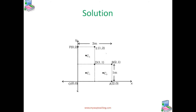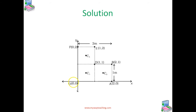Choosing X and Y axes as given in the figure, we have the coordinates of the vertices of the L-shaped lamina as given. The coordinates of vertex A is (2,0), F is (0,2), and O is (0,0). We can think of the L shape as consisting of 3 squares.